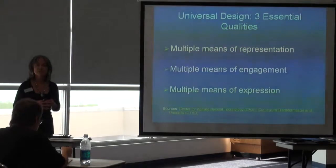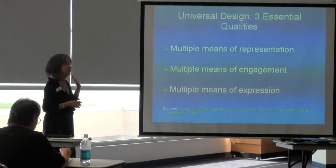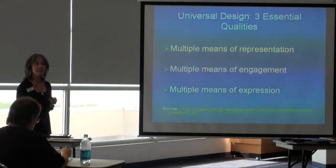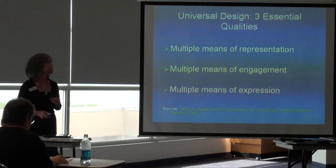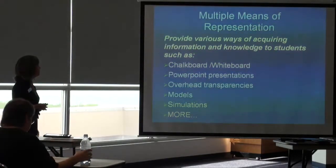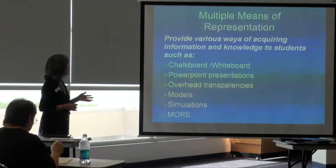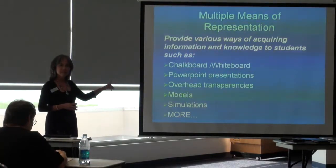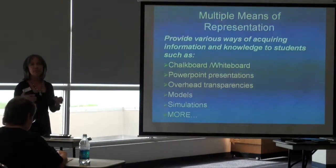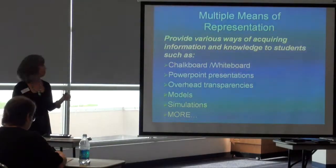The basic elements of Universal Design are: multiple means of representation, multiple means of engagement, and multiple means of expression. Multiple means of representation means providing various ways of acquiring information and knowledge to students — here are some examples for individuals of different learning styles, different disabilities, and different types.